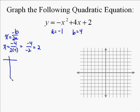So we plug 4 in for b, we plug negative 1 in for a, and we get negative 4 over negative 2 equals 2. So the x-coordinate of the vertex is 2.